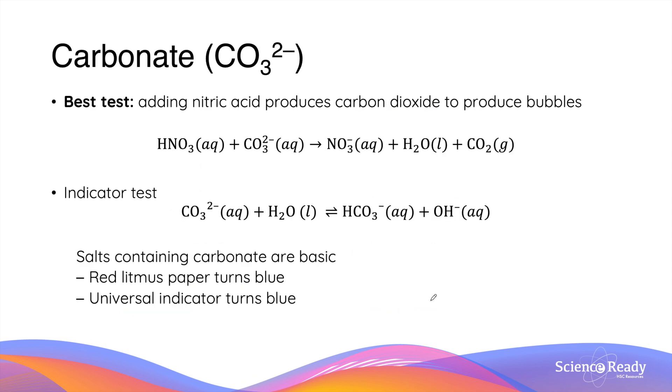The best test for carbonate ions is by adding nitric acid. The reaction between nitric acid and carbonate ions produces carbon dioxide, and this produces bubbles in the solution. Carbonate ions also react with water to produce hydrogen carbonate and hydroxide ions. The presence of these hydroxide ions also means the solution that contains carbonate is basic. So red litmus paper turns blue and the universal indicator also turns blue.